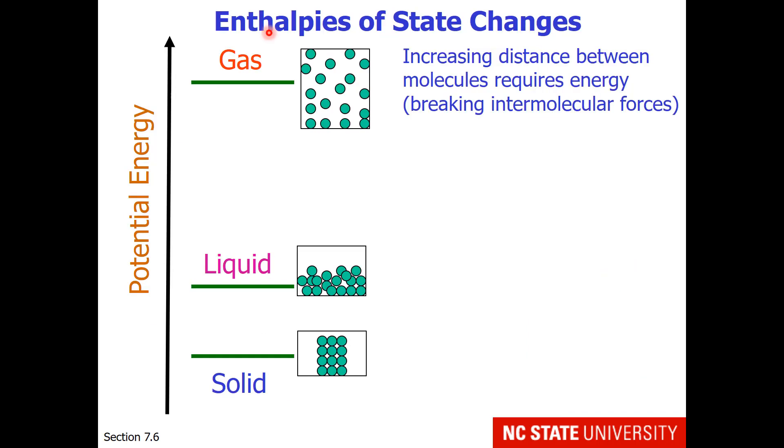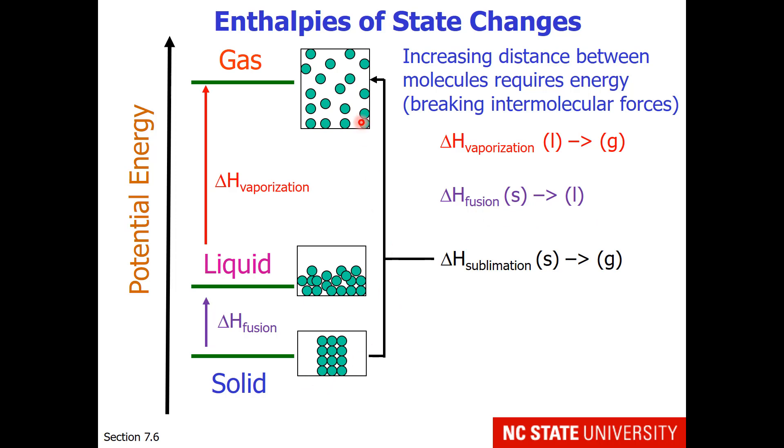State changes have what are called enthalpies, which are known as changes of heat at constant pressure. Increasing the distance between molecules requires energy because we're breaking intermolecular forces. The energy required to go from liquid to gas phase at the same temperature is known as the enthalpy of vaporization. The energy required to go from solid to liquid phase is known as the enthalpy of fusion. And going from solid to gas phase is known as the enthalpy of sublimation.